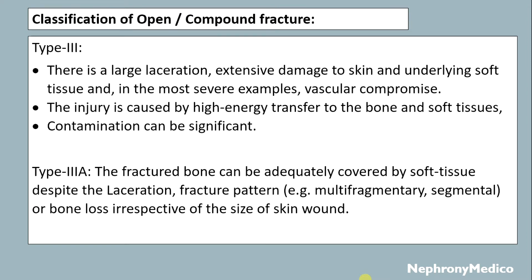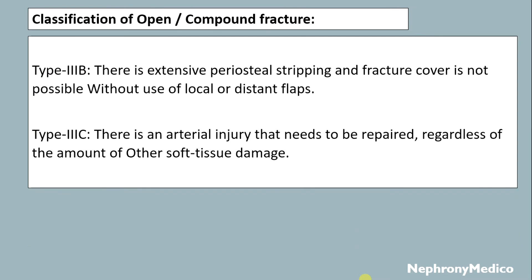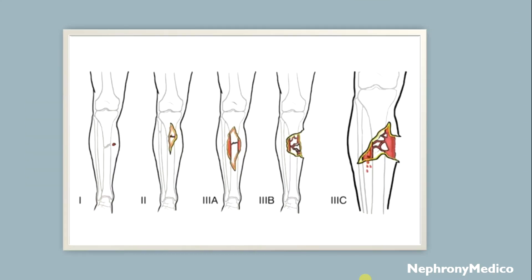Type 3 is further classified into three subtypes. Type 3a: the fractured bone can be adequately covered by soft tissue despite the laceration and fracture pattern. Type 3b: there is extensive periosteal stripping and fracture cover is not possible without use of local or distant flaps. Type 3c: there is an arterial injury that needs to be repaired regardless of the amount of other soft tissue damage. This picture shows all types: Type 1, Type 2, Type 3a, Type 3b, and Type 3c.